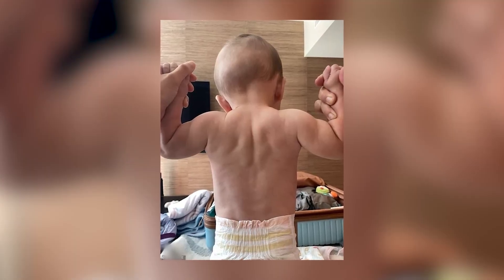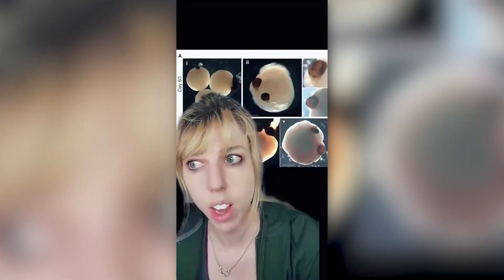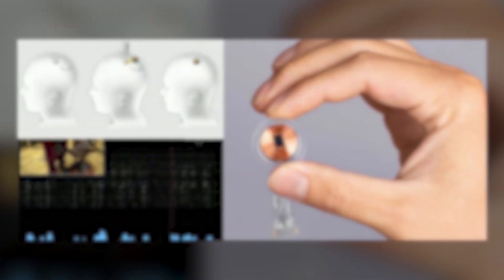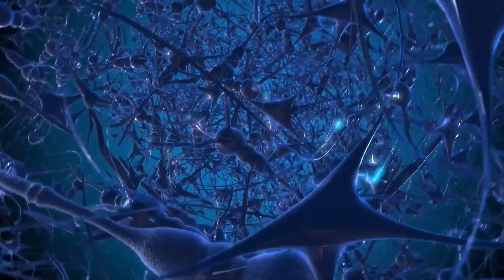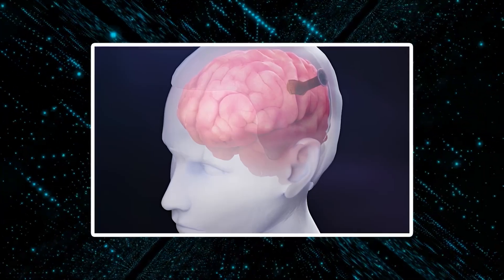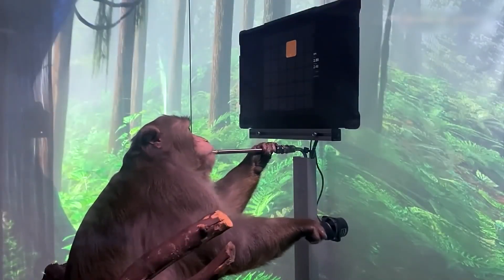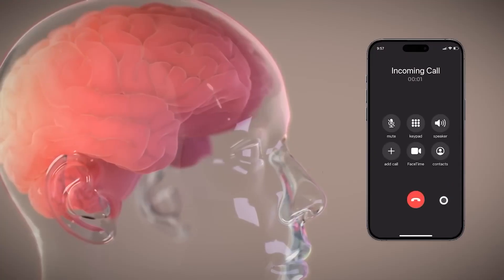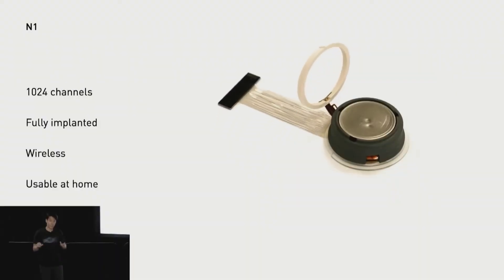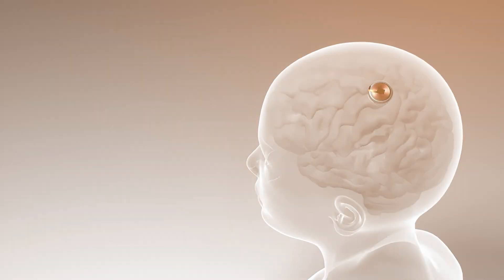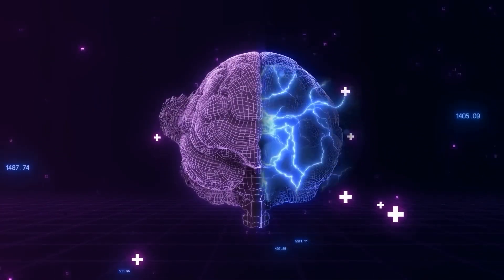Yet the concept of Neuralink babies sparks intense ethical debate. Critics highlight unresolved risks: long-term brain health, data privacy, and the moral implications of modifying children's cognition. While Wang frames the technology as an evolutionary leap, skeptics question whether society should normalize invasive implants for non-medical enhancement. Neuralink's own trajectory underscores these tensions. Despite receiving FDA breakthrough device status for its Blindsight implant, the company faces scrutiny over animal testing complications and the broader implications of merging human biology with machines. Wang's stance reflects a growing Silicon Valley mindset: human limitations are engineering challenges waiting to be solved. But as Neuralink and rivals accelerate toward commercialization, the world must confront a pivotal question. Should we embed AI into the next generation's brains, or do the risks outweigh the potential?